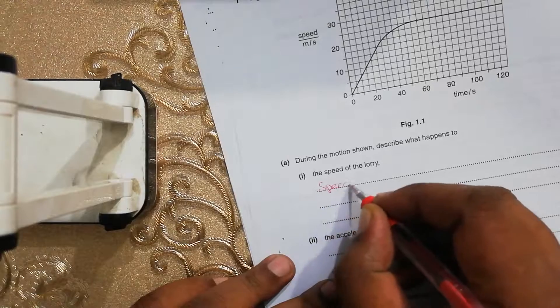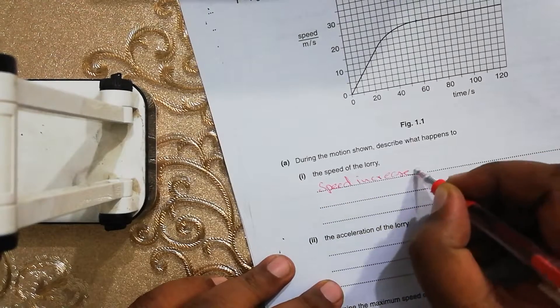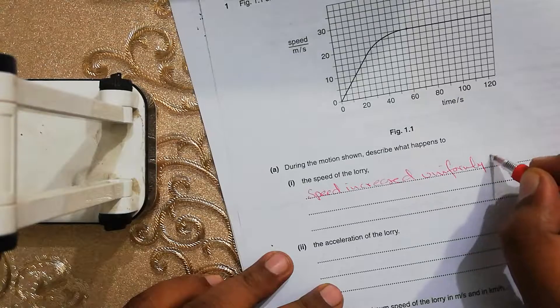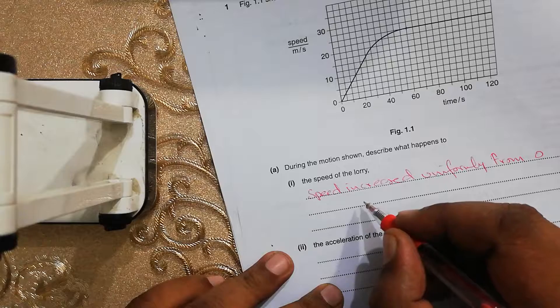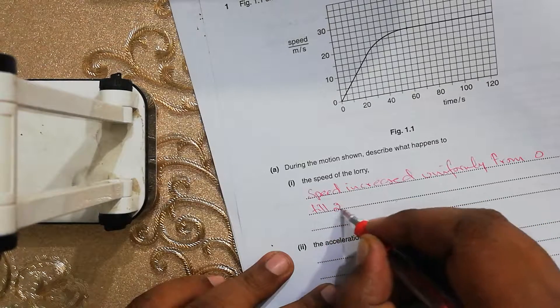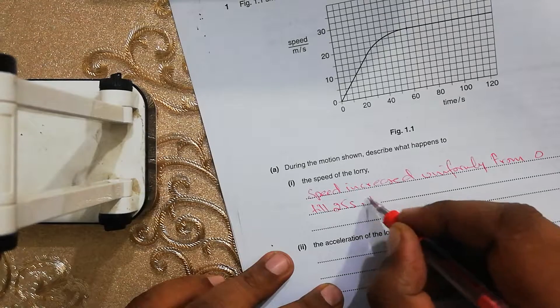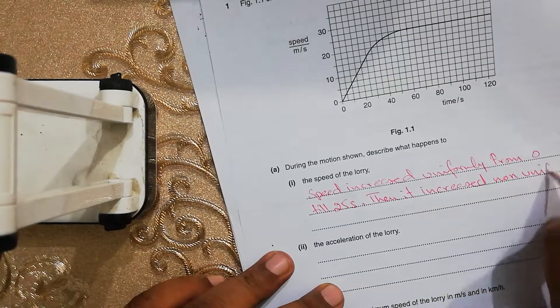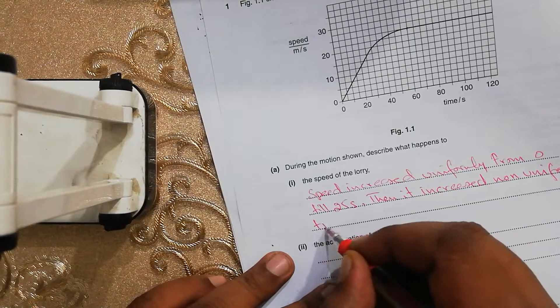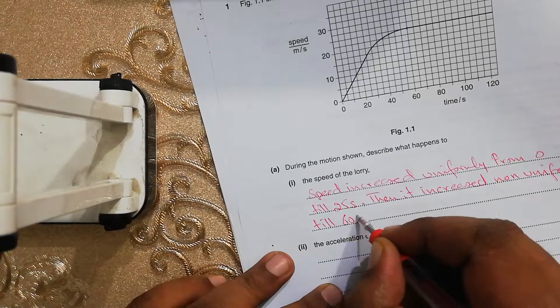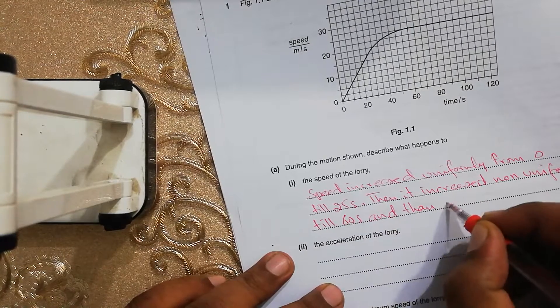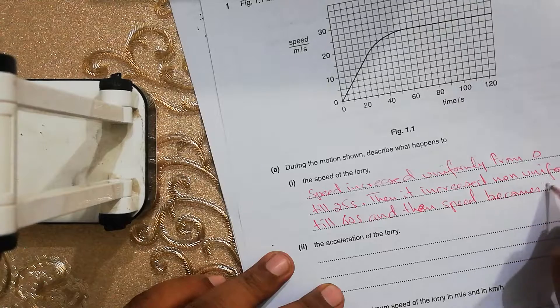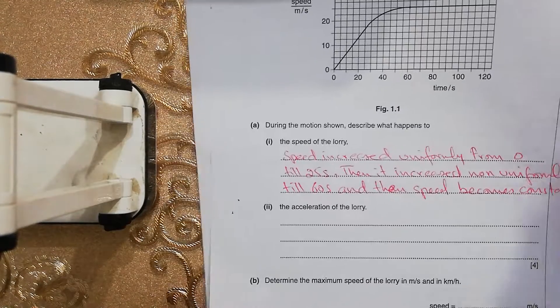The speed increased uniformly from 0 till 25 seconds. Then it increased non-uniformly till 60 seconds. And then speed becomes constant. Hopefully you understand this.